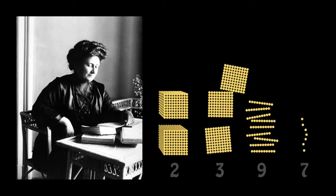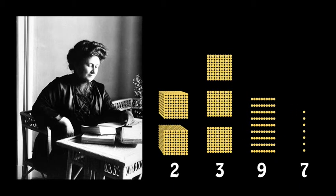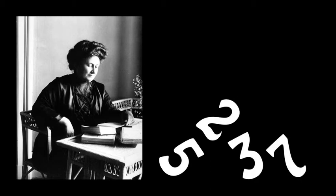Of course you can. The number is 2,397. Try doing that for a scrambled number in the Arabic number system, and you can see how important place value is. Figure out what number I've scrambled here — you can't. There are many possibilities.